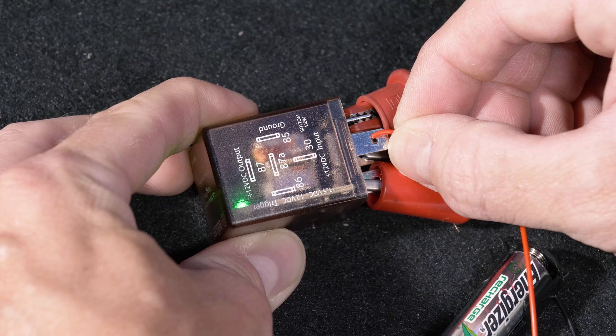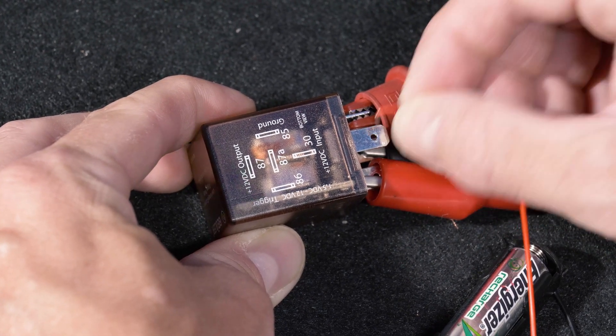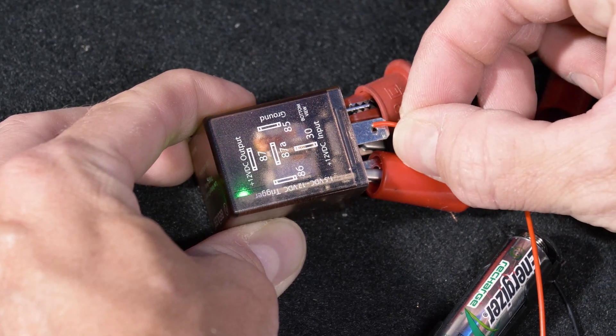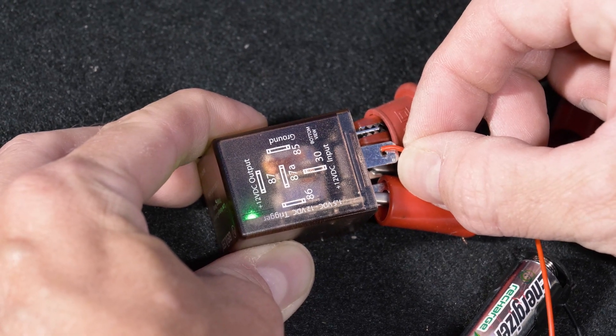This relay is really cool in the sense that it's a single pole dual throw. So you can have, for instance, when it's off, the center terminal has 12 volts. When it's on, the outer terminal has 12 volts. So you can do a variety of different projects with it.